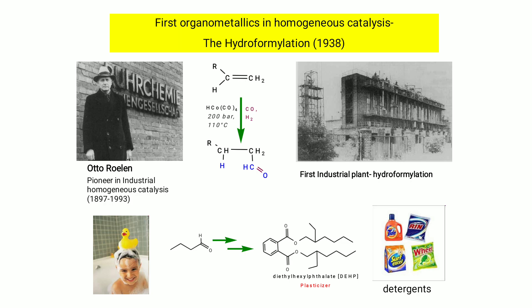The first organometallic in homogeneous catalysis is hydroformylation, discovered in 1938 by Otto Roelen, a pioneer in industrial homogeneous catalysis. He found the first industrial plant where hydroformylation took place. The reaction involves an alkene heated at 110°C under 200 bar pressure with carbon monoxide and hydrogen, forming an aldehyde.